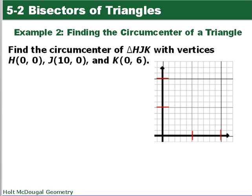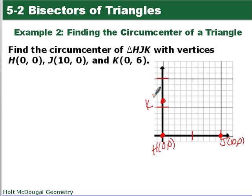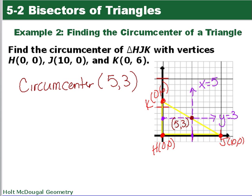In this example, we want to find the circumcenter of triangle HJK with vertices H at (0, 0), J at (10, 0), and K at (0, 6). We plot those three points and connect them to form the triangle, then find the circumcenter.